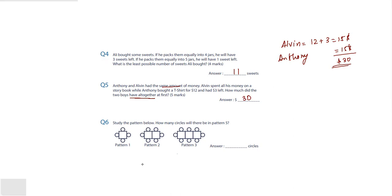Now let's read question number six. Study the pattern below and how many circles will be there in pattern 5. If you see this, in pattern 1, how many circles do we have? 4. In pattern 2, how many circles do we have? 1, 2, 3, 4, 5, 6. I have 6. How many do we have in pattern 3? We have 1, 2, 3, 4, 5, 6, 7, 8.